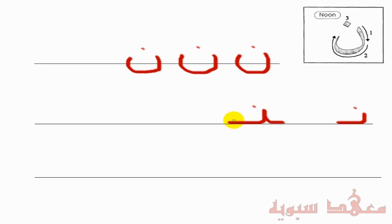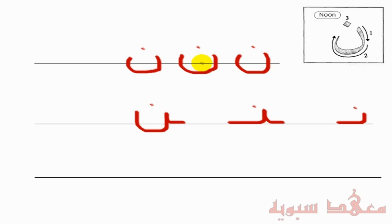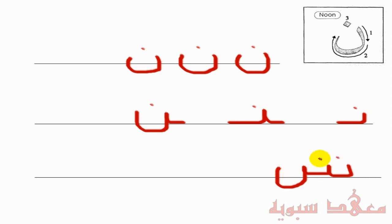In the final form, this is where it's different: you have the previous letter, and then it comes up, but then it goes more down — similar to the isolated form. To write three Noons together is as follows, and then you dot them.